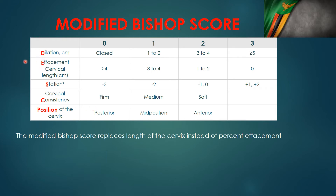When you look at dilatation — the D — and effacement as the E, the numbers on these parameters are exactly the same, only running in different directions. For dilatation: a closed cervix scores zero, one to two centimeters scores one, three to four centimeters scores two, and five centimeters or above scores three.